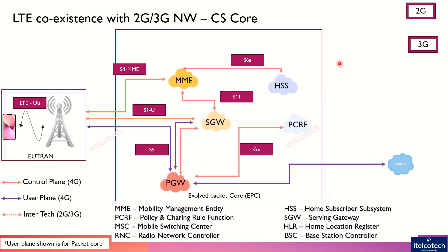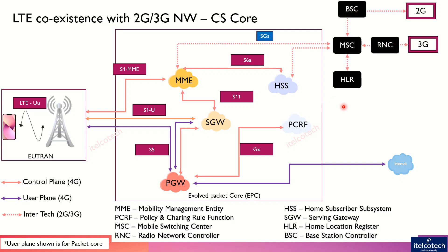We need some kind of provisioning of these different legacy networks and their association with the LTE network. In 2G, there is a Base Station Controller, and in 3G there is a Radio Network Controller, both connected to the Mobile Switching Center (MSC). There is also an HLR — Home Location Register — similar to the HSS, which contains all user and subscription information.